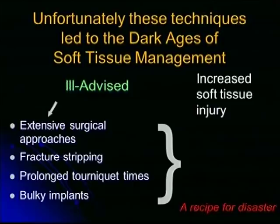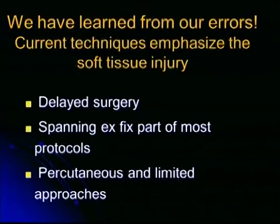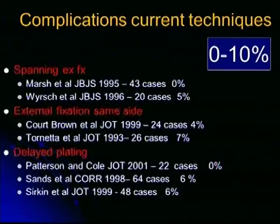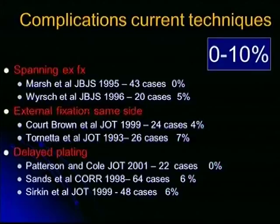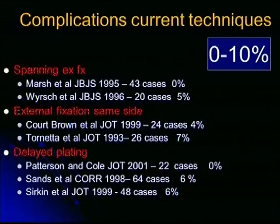In the 1980s and 90s, many papers reported gross complications — amputations, infection, and ankle fusions following treatment of these fractures. We have learned from our errors and current techniques emphasize soft tissue injury and its management. Surgery is delayed, spanning external fixation is included in most protocols, and percutaneous and limited approaches protect the soft tissues. Complications with current techniques are between 0–10%, which is acceptable. Spanning external fixation, same-side external fixation, and delayed plating have all been shown to decrease complications.